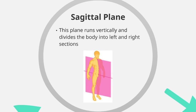And finally, the sagittal plane. This plane is another one that runs vertically, but this time it divides the body into left and right sections.